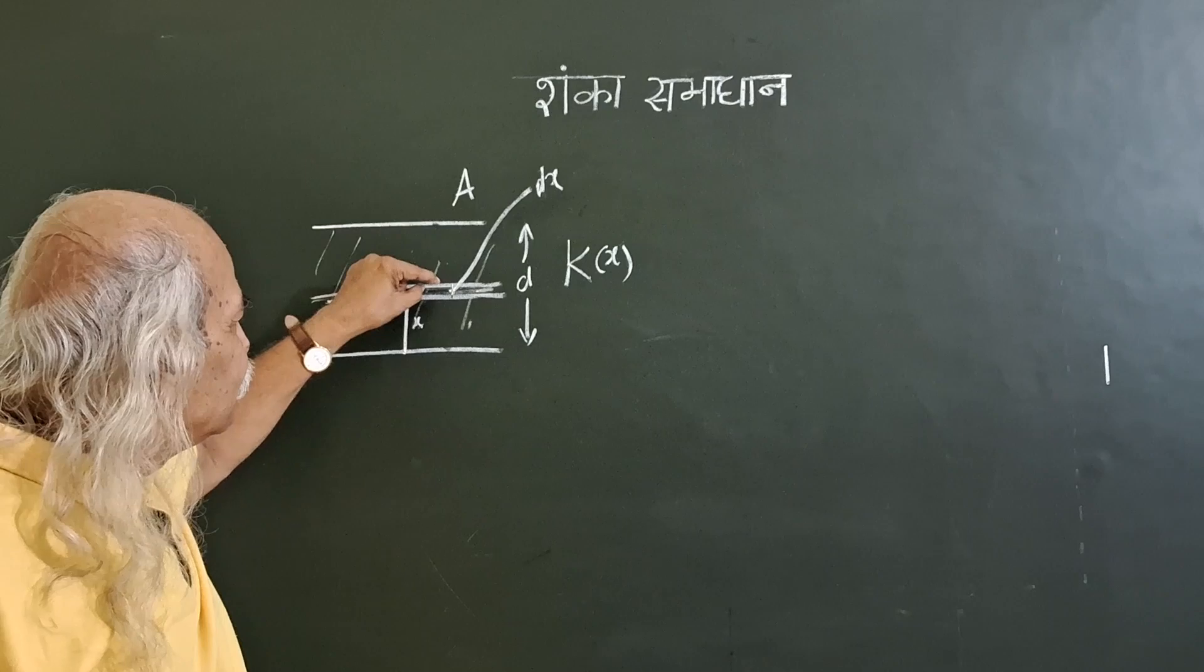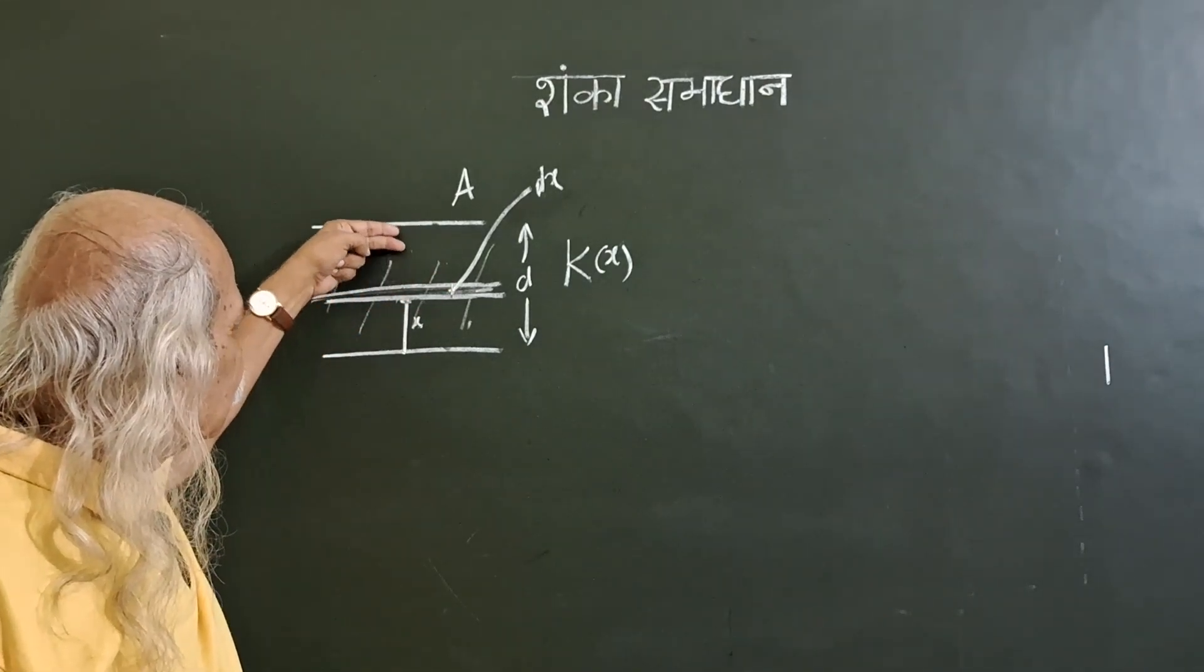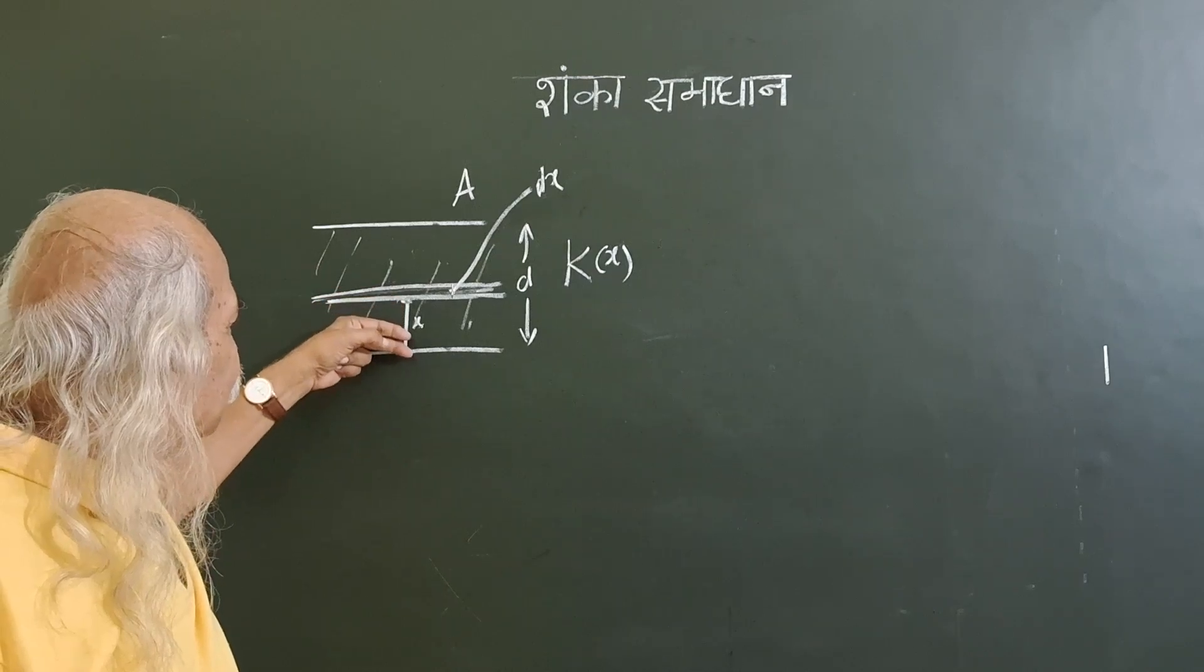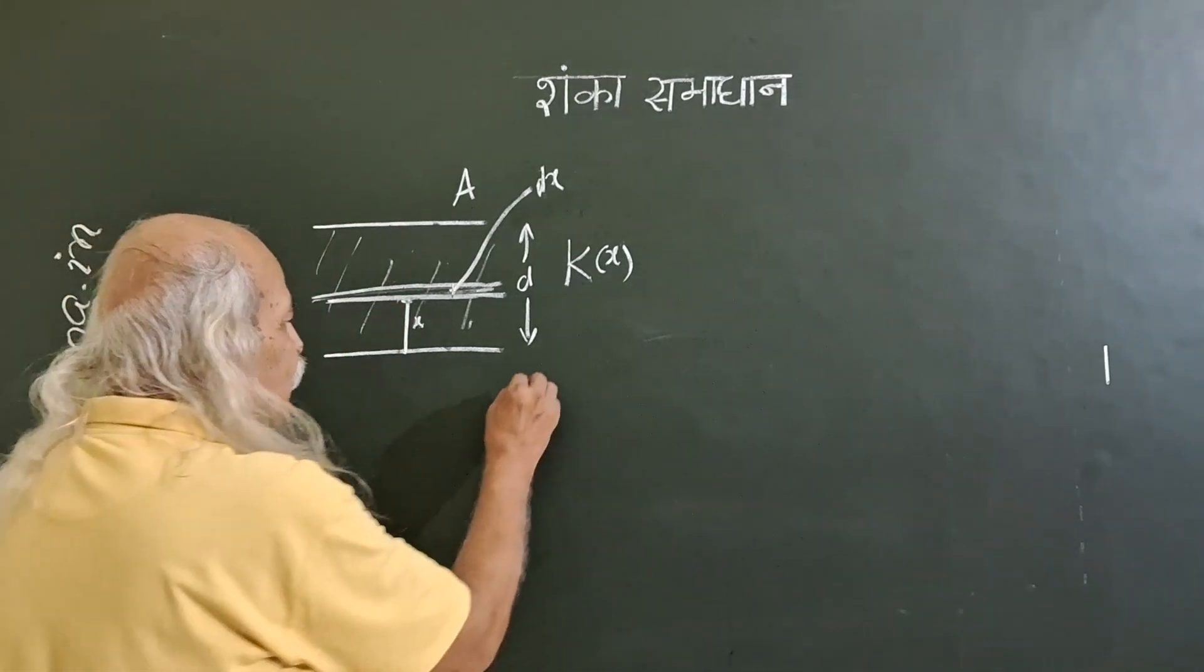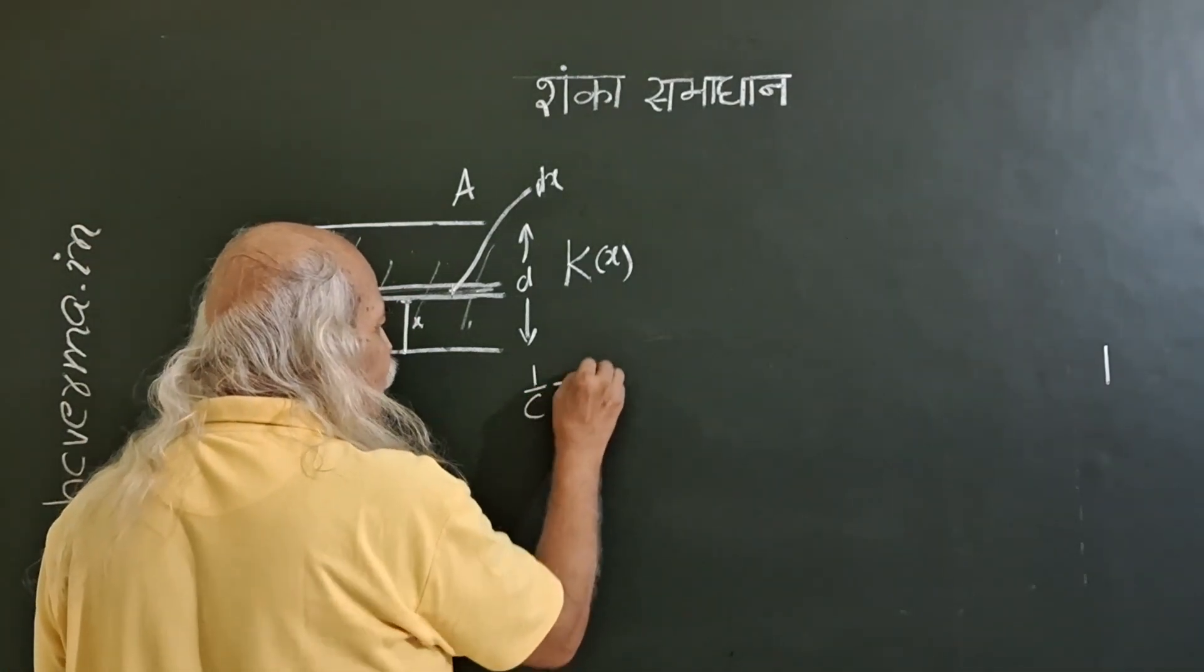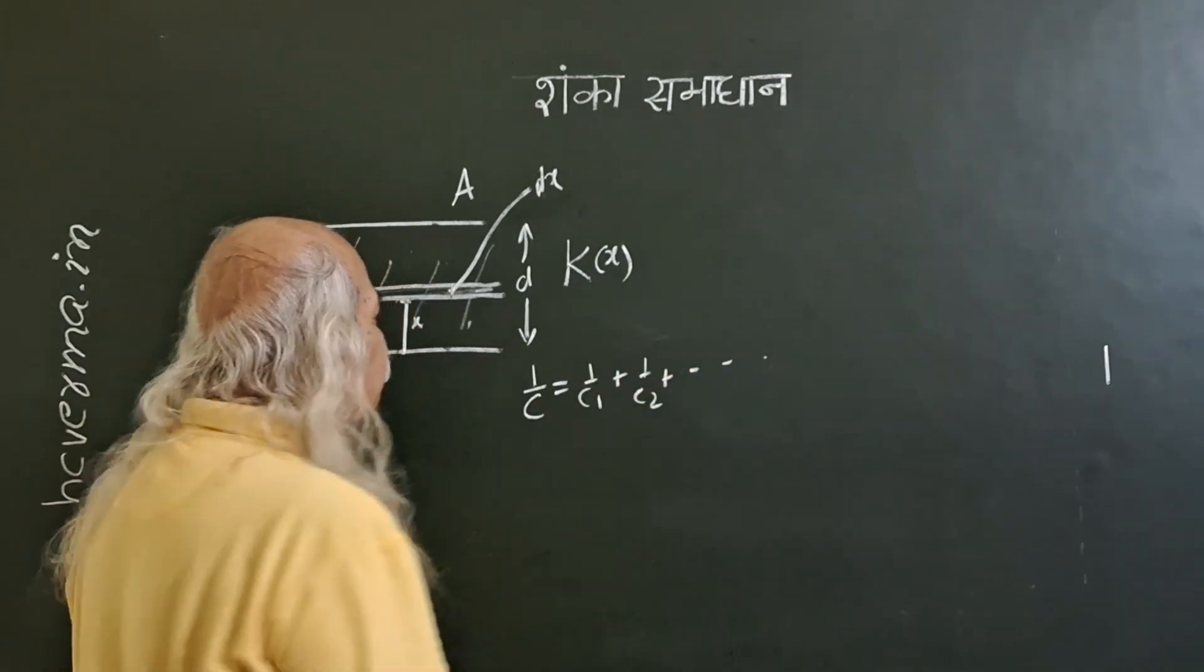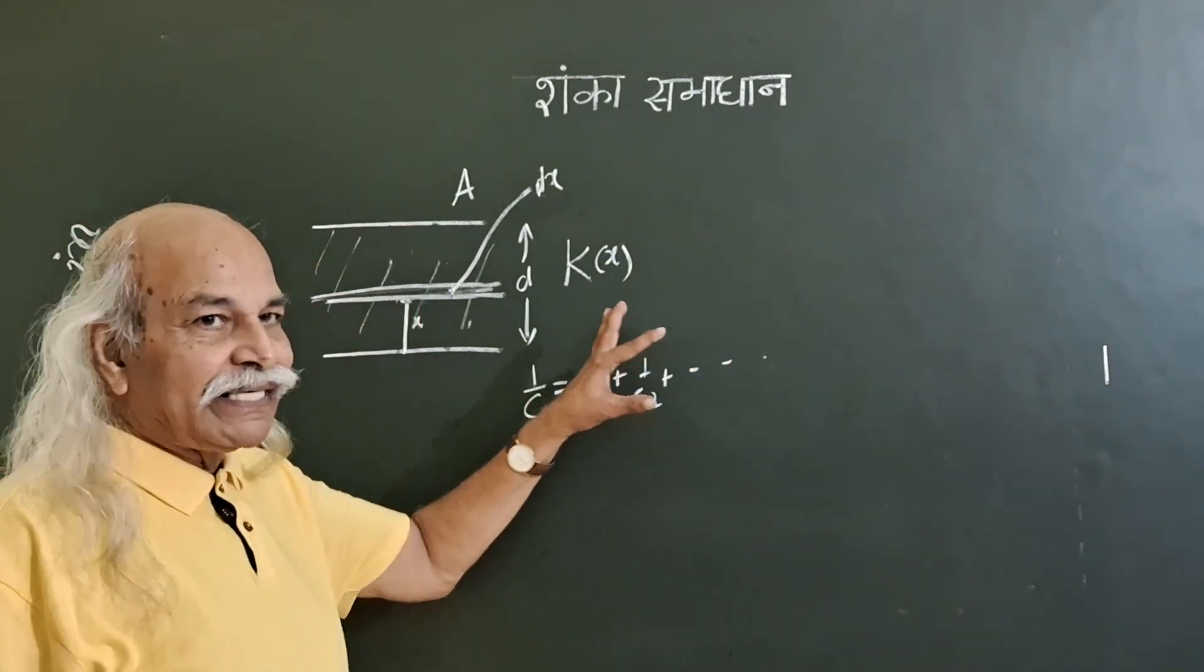And then you know that such capacitors are all lined up in parallel, and therefore it will be 1 by c equal to 1 by c1 plus 1 by c2 type. And if it is continuous, you have to integrate.